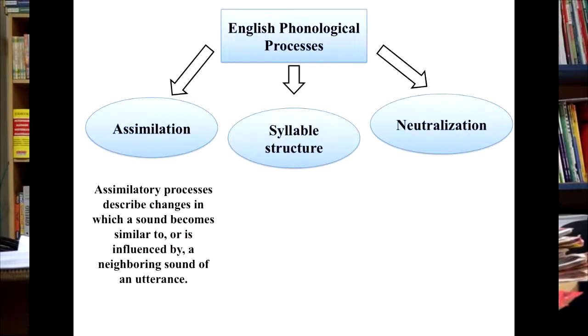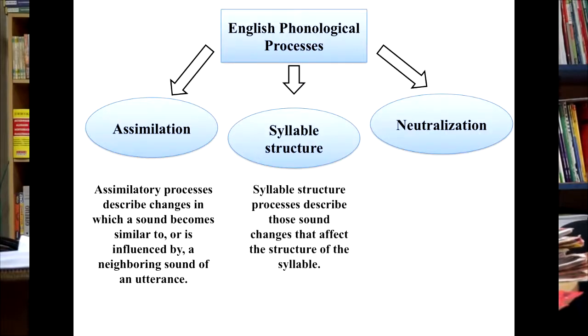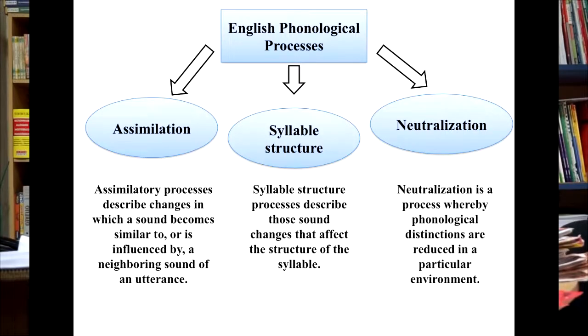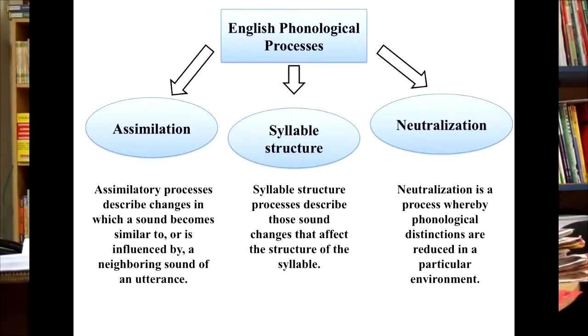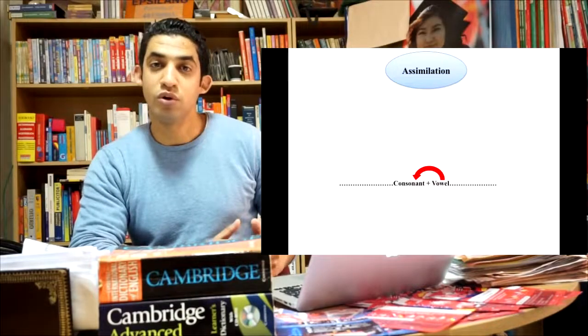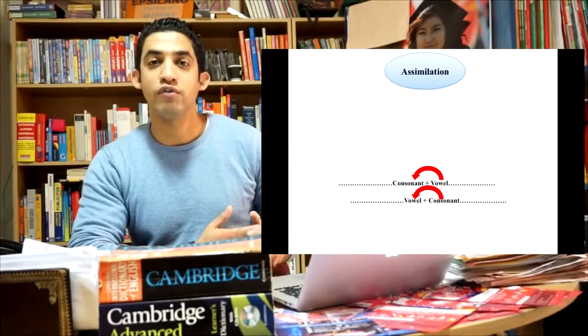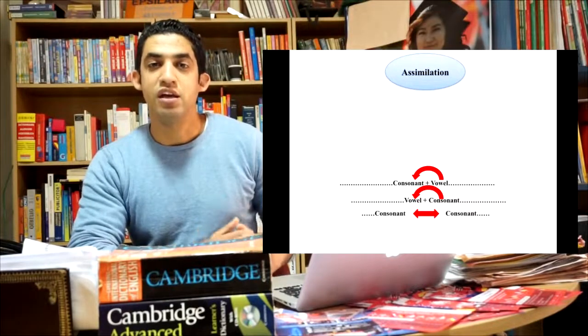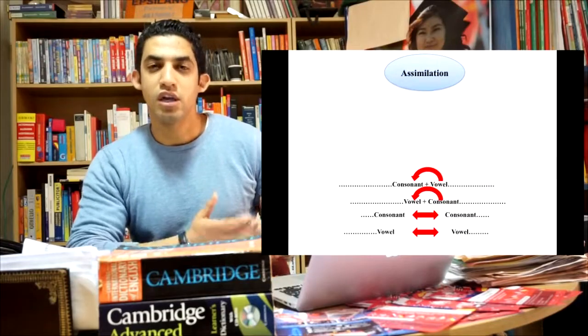Assimilation processes describe changes in which a sound becomes similar to or is influenced by a neighboring sound of an utterance. Syllable structure processes describe those sound changes that affect the structure of the syllable. Neutralization is a process whereby phonological distinctions are reduced in a particular environment. In assimilatory processes, one segment may take on features from another neighboring segment. One consonant may pick up features from another vowel, or a vowel can take on features of a consonant. A consonant may influence another consonant, or a vowel may influence another vowel.